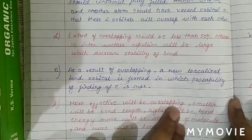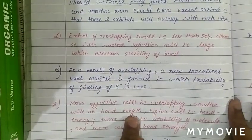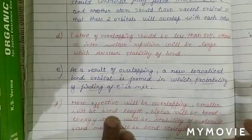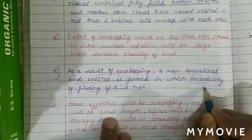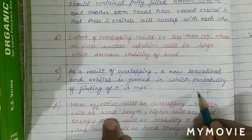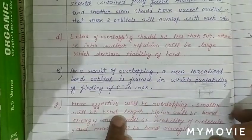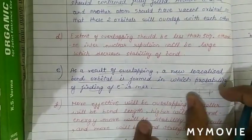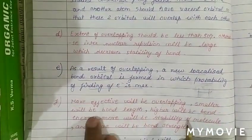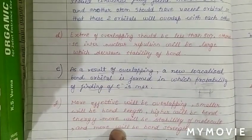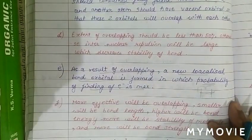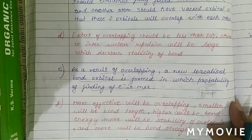If effective overlapping takes place, bond length will be smaller. Bond length is the distance between the nuclei of two atoms undergoing bond formation. If overlapping is more extensive, the distance between centers is less, therefore bond length is less, bond energy is high, bond strength is high, and stability of the molecule is high.